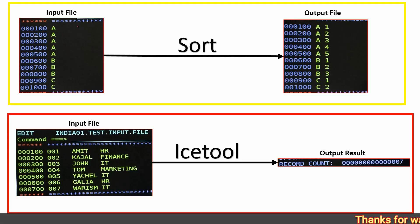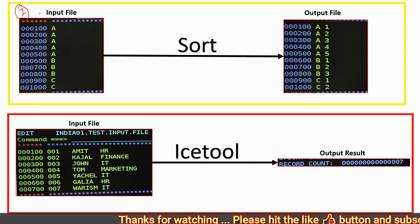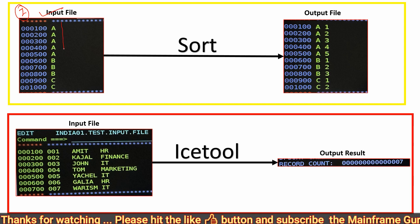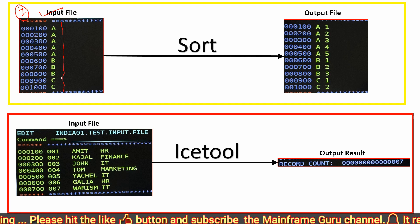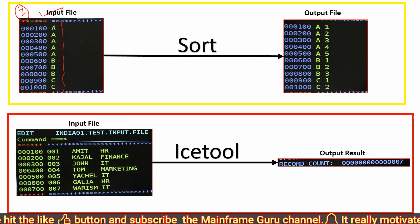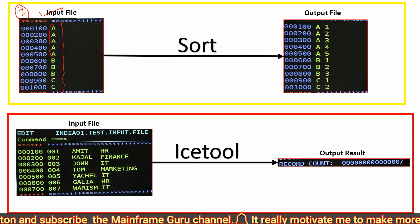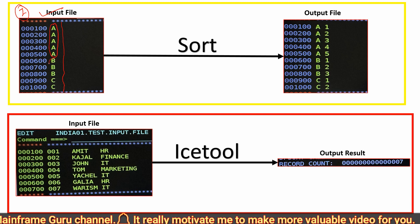Hi ladies and gentlemen, good morning or good evening to everyone. Today we are going to achieve two desired output results. First, we have one input file in which we have to write the sequence number at the third position or third column, based on the data available on the first byte or first column.